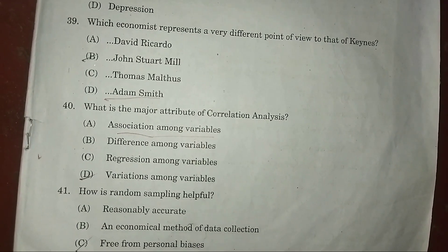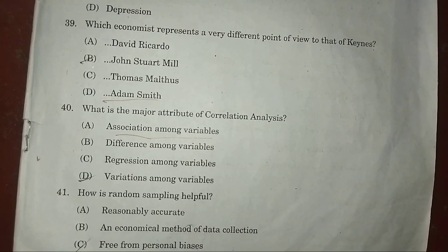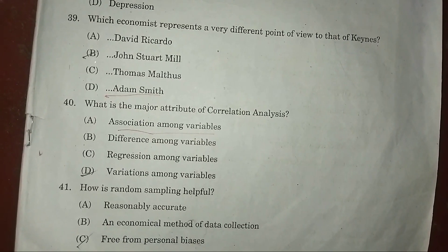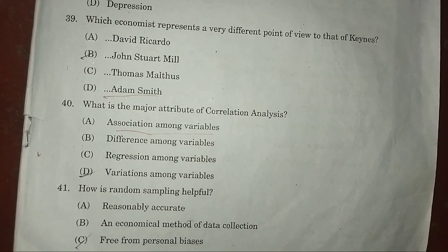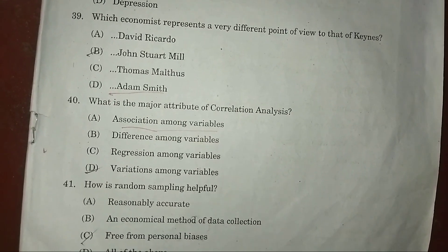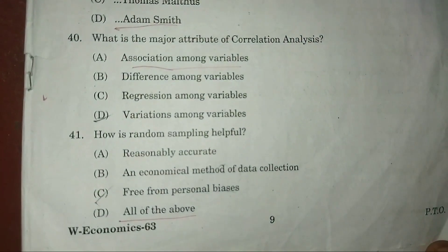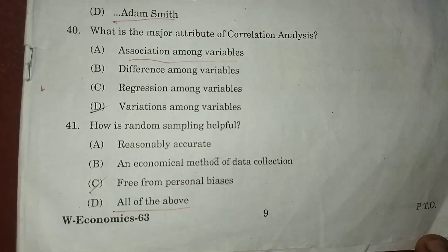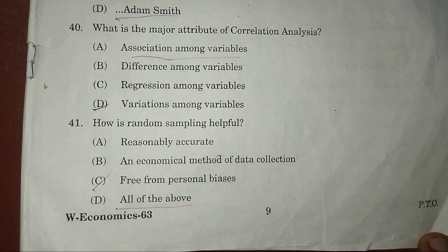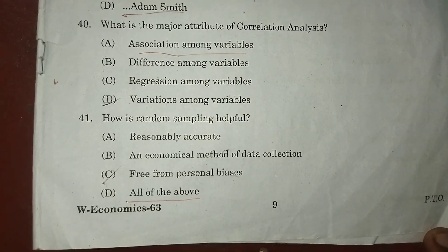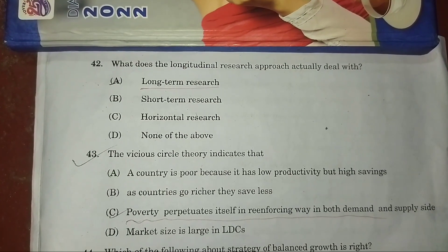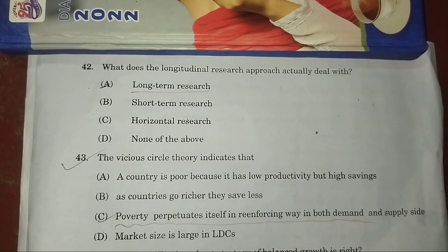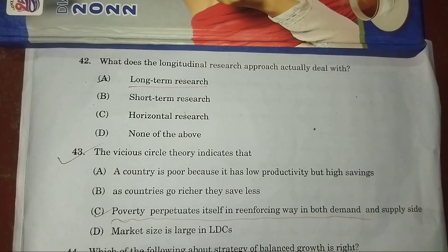Question 40: What is the major attribute of correlation analysis? Answer: A — association among variables. Question 41: How is random sampling helpful? Answer: D — all of the above.